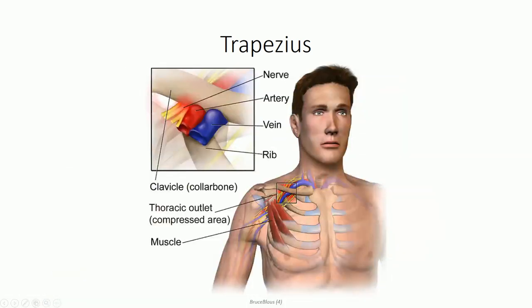Clinically, the trapezius plays a role in maintaining proper alignment of the shoulder girdle. Weakness in the upper fibers, for example, results in the condition known as dropped shoulder syndrome, which can result in impingement of a number of neurovascular structures supplying the upper limb under the collapsed clavicle. We'll return to this in a later lesson.